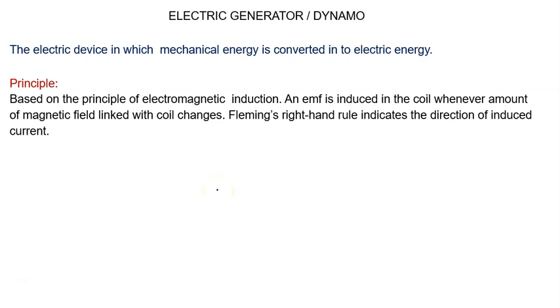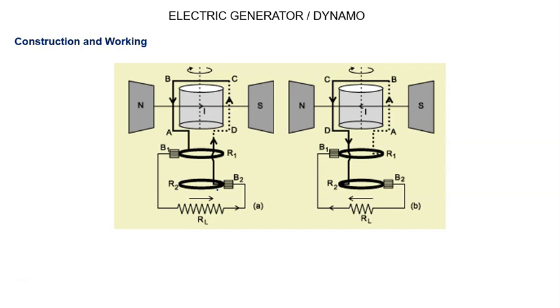Now we will discuss the construction and working. Generator has a rectangular coil having large number of turns. We have shown only one turn that is A, B, C, D. This is known as the armature coil which is made up of insulated copper wire which is wound over a laminated soft iron core.